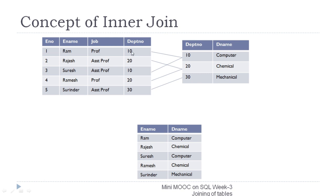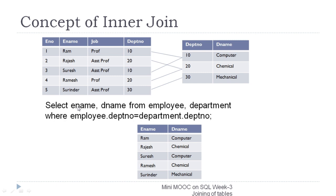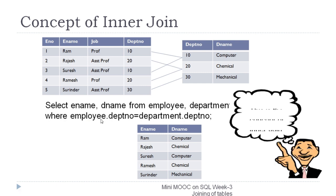In this way, Ram makes a pair with the computer department, Rajesh with chemical, Suresh with computer, Ramesh with chemical, and Surinder with mechanical — selecting the five desired records. The corresponding SELECT statement is: SELECT ename, dename FROM employee, department WHERE employee.department_number = department.department_number. Since department number is common in both tables, it is important to add the table name as a prefix to resolve ambiguity. This is the concept of inner join — if we add a WHERE condition to a Cartesian join, it is called an inner join.